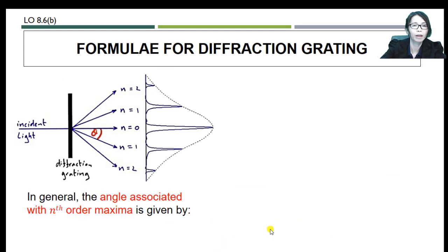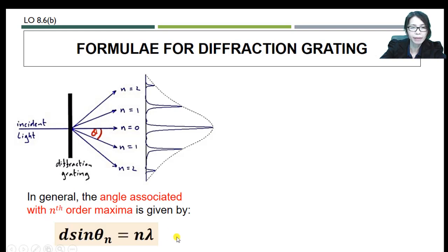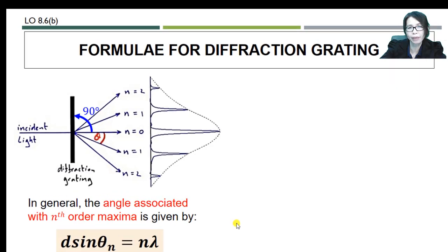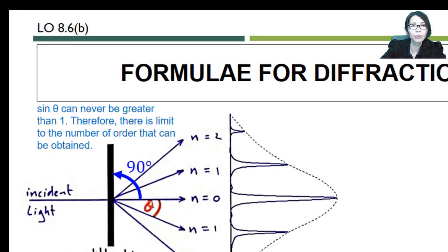In general, the angle associated with the nth order maximum is given by d·sinθ = nλ. We can calculate the angle for the first maximum, second maximum, and so on using this equation. Remember that sinθ can never be greater than 1, so there is a limit to the number of orders that can be obtained.